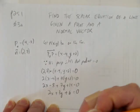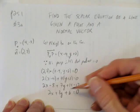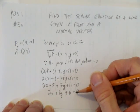And here we have it. The equation of the line in scalar form is 2x + 7y + 6 = 0.